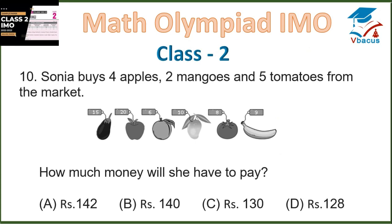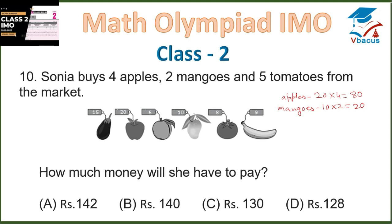Question 10: Sonia buys 4 wrappers, 2 mangoes and 5 tomatoes from the market. How much money will she have to pay? 4 wrappers at 20 rupees each: 20 × 4 = 80. 2 mangoes at 10 rupees each: 10 × 2 = 20. 5 tomatoes at 8 rupees each: 8 × 5 = 40. Adding them: 80 + 20 + 40 = 140 rupees. It is option B, so option B is correct.